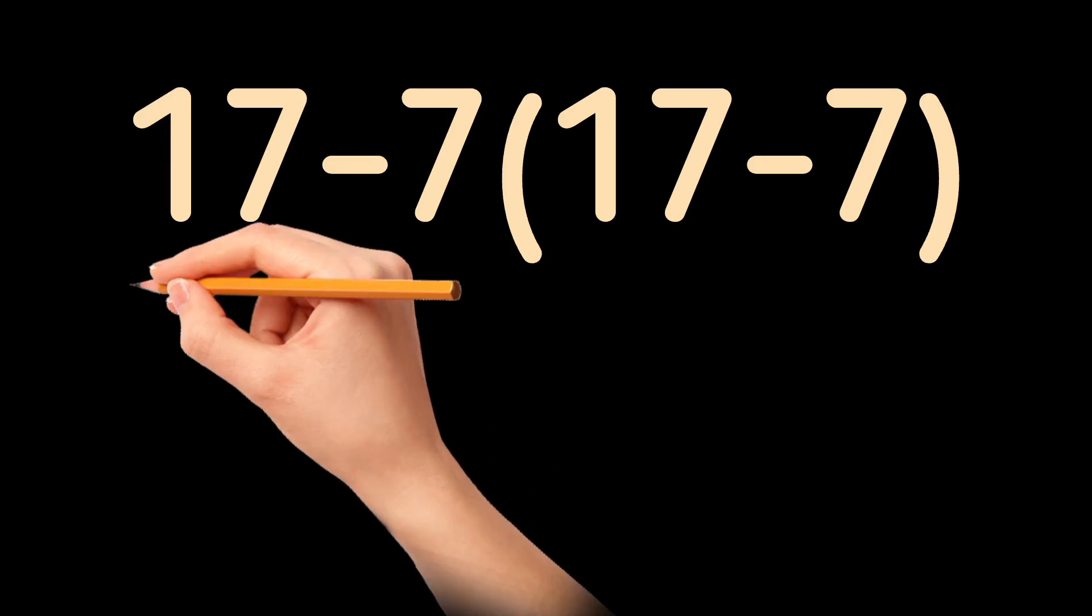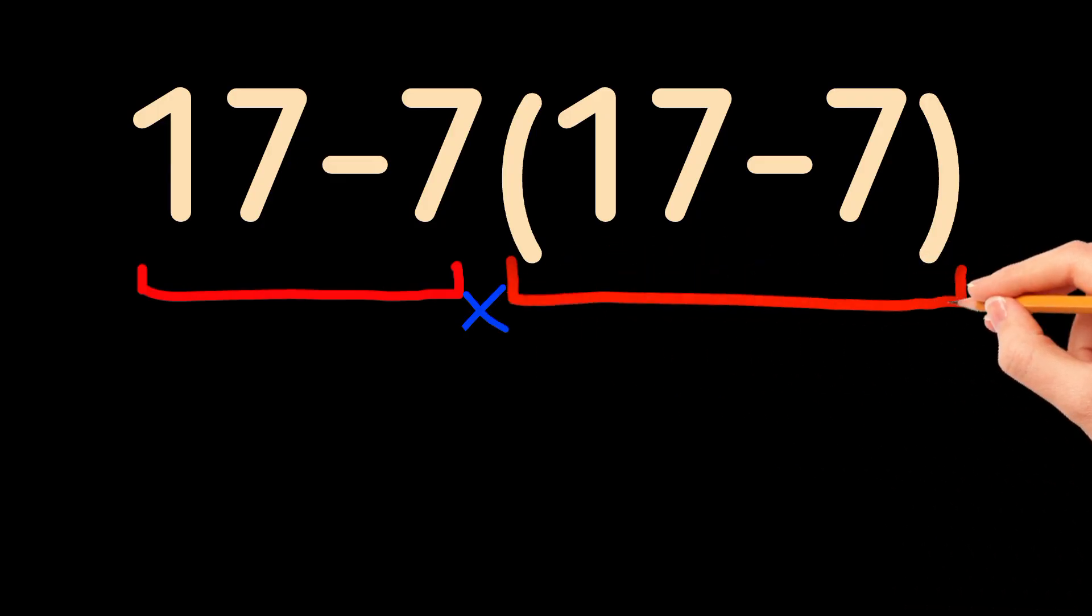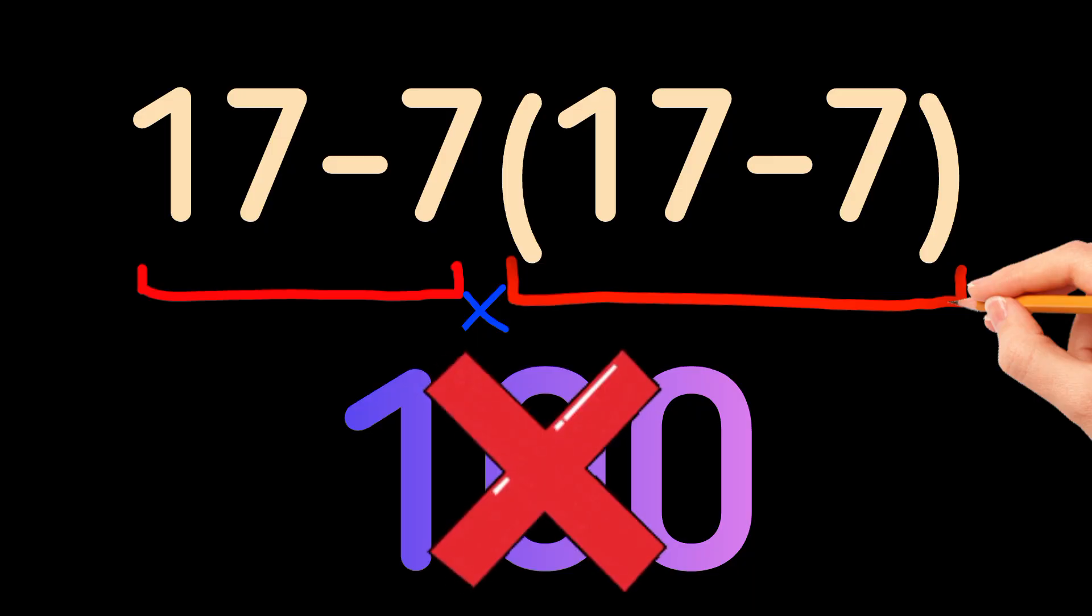Looks easy, right? 17 minus 7 times 17 minus 7. Most people say it's 100, but guess what? That's wrong.